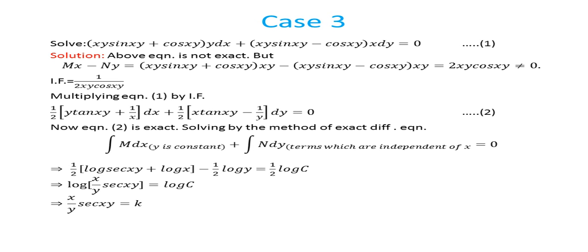Case 3 example: (xy·sin(xy) + cos(xy))·y dx plus (xy·sin(xy) minus cos(xy))·x dy equal to 0. You can check that the equation is not exact, but Mx minus Ny is not equal to 0. So IF equals 1 upon 2xy·cos(xy). Multiplying equation by the IF gives an exact equation, which is solved by the method of exact differential equations. After simplification, the final answer is x upon y · sec(xy) equal to k.